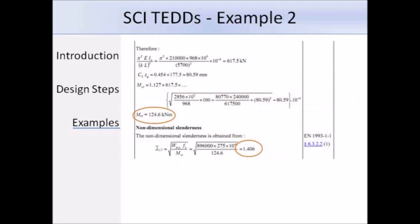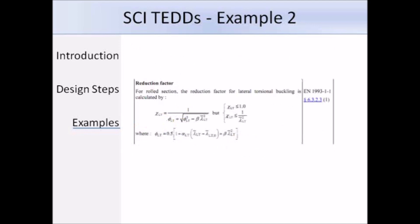Now the critical moment, MCR, has been worked out. We can work out lambda bar LT, so it's 1.406. Next, we need to work out the reduction factor, and this example is using a rolled section, and it's also using the special case, and we have these extra terms beta and lambda bar LT0.